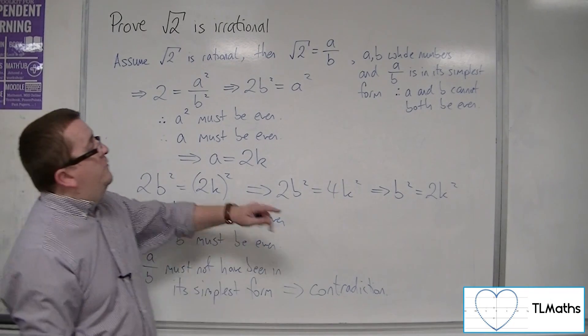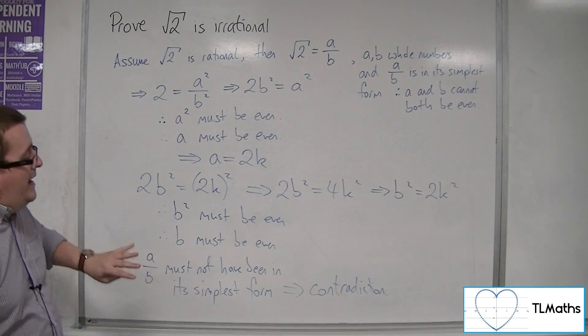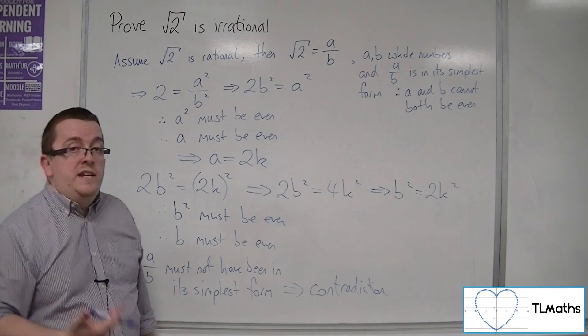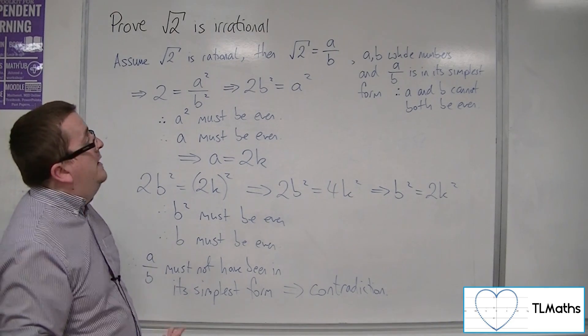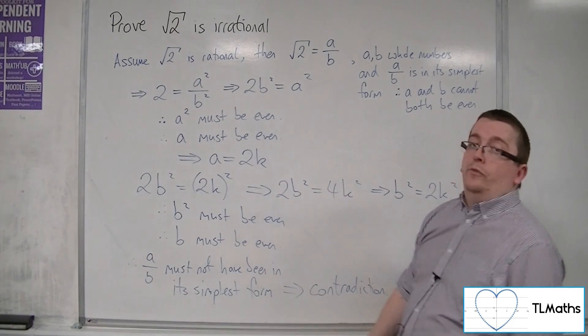Okay, so we've got this contradiction from our result here. So if this is true, that a over b was not in its simplest form, then that must mean that our original assumption must be false.